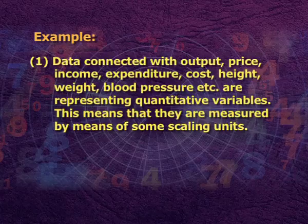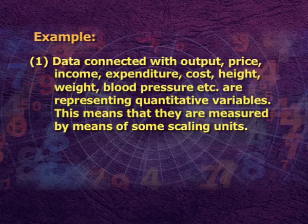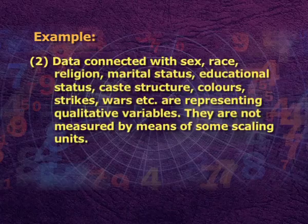Data connected with sex, race, religion, marital status, educational status, caste structure, colors, strikes, wars, etc. are representing qualitative variables. They are not measured by means of some scaling units. The question is how we can deal with the qualitative nature of these variables. By some approach we may introduce them so that they may be converted from qualitative into quantitative nature. Here we use what is called dummy variable, or categorical variable, or dichotomous variables. We want to study regression analysis concerning such dummy variables.